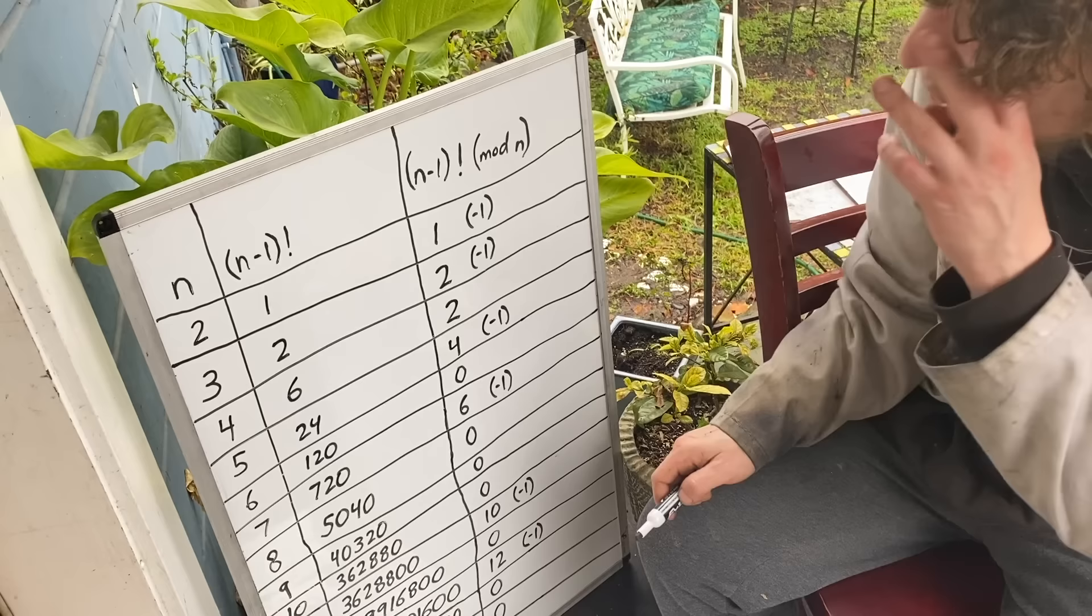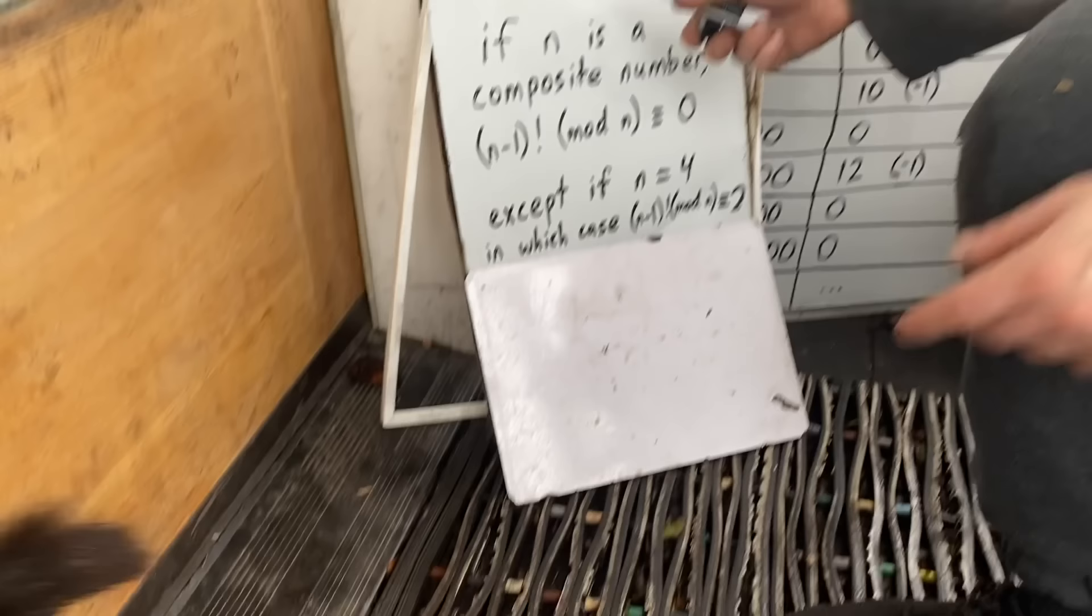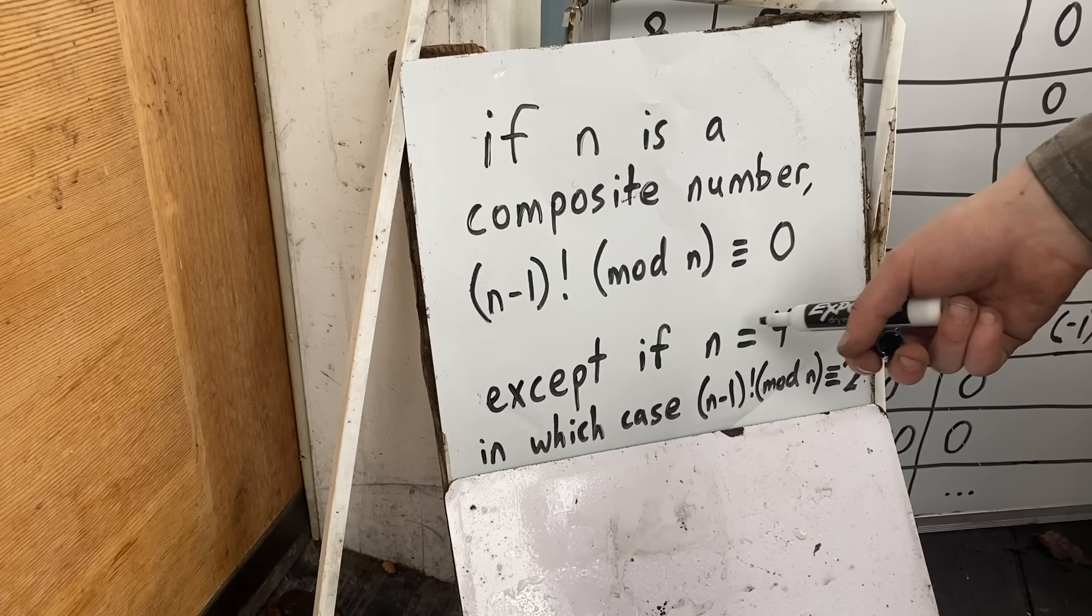So we can kind of verify that apart from 4 which is an exception, all of the composite numbers will end up with zero. So it's pretty easy to prove that for any composite number n, n minus 1 factorial in mod n will be congruent to zero, except when n is 4, which is too small to follow the usual patterns, so it ends up congruent to 2.